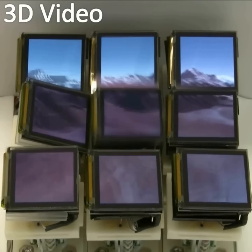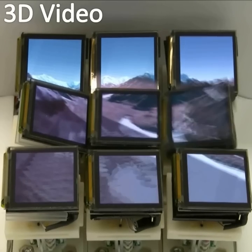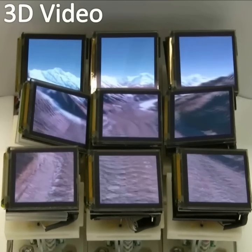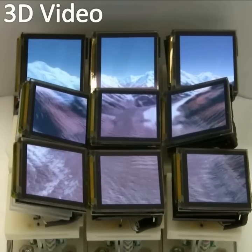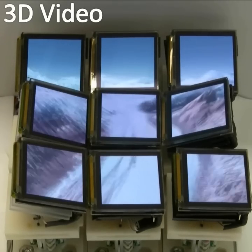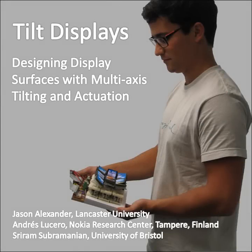3D video is also important for fluid interaction when manipulating 3D data on a tilt display. Actions such as panning and zooming must modify both the visual and physical configuration. Tilt displays are a new form of physically mutatable display surface that opens a range of exciting new opportunities for combining visual feedback with multi-axis tilting and actuation.